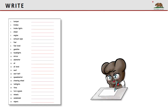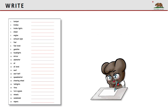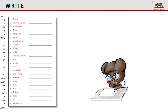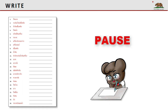Now let's do some writing. In Section 2, you should write each word in Thai. If you don't have a worksheet, you can just use a sheet of paper. Pause the video until you complete this activity. In Section 3, you should write each word in English. Pause the video until you complete this activity.